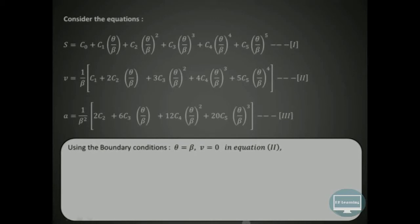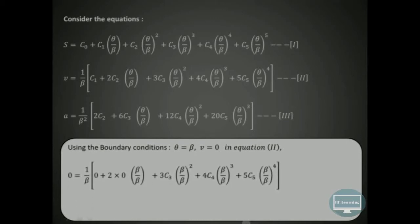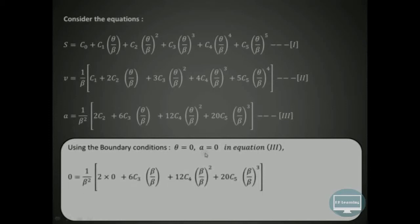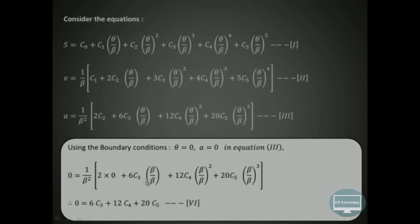At theta = beta, V = 0: with C1=C2=0, we get 3C3 + 4C4 + 5C5 = 0. At theta = beta, A = 0: with C2=0, we get 6C3 + 12C4 + 20C5 = 0. So the three simultaneous equations for the fall motion are: C3 + C4 + C5 = −H, 3C3 + 4C4 + 5C5 = 0, 6C3 + 12C4 + 20C5 = 0.